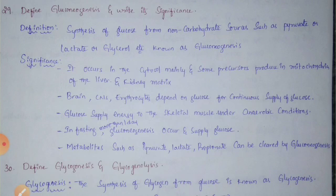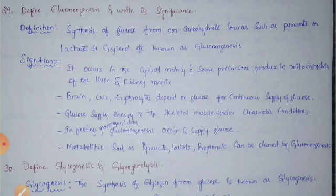Define gluconeogenesis and write its significance. Gluconeogenesis means the synthesis of glucose from non-carbohydrate sources such as pyruvate, lactate, or glycerol — 'neo' means new glucose molecule from metabolites. Significance: It occurs mainly in the cytosol, with some precursors produced in the mitochondrial matrix of the liver and kidney. The brain, central nervous system, and erythrocytes depend on gluconeogenesis for a continuous supply of glucose.